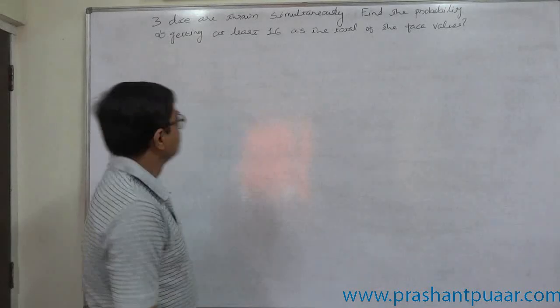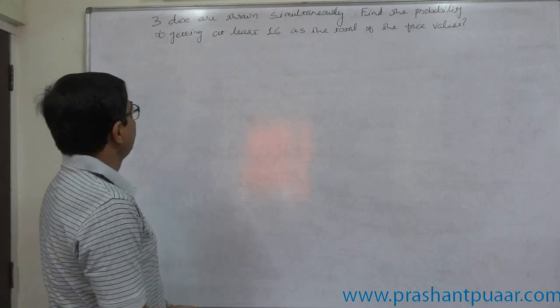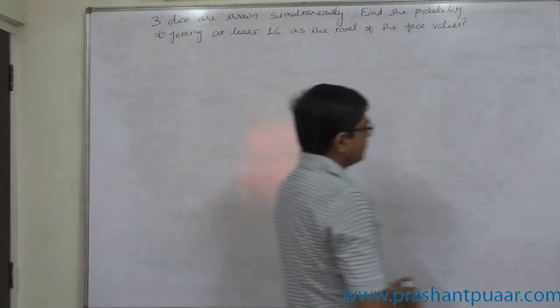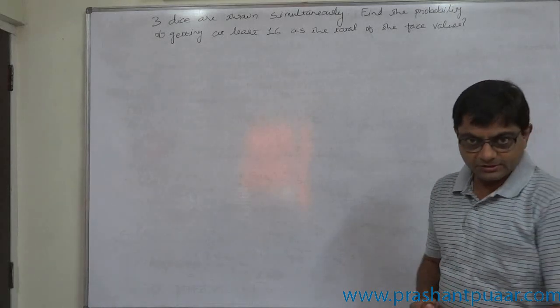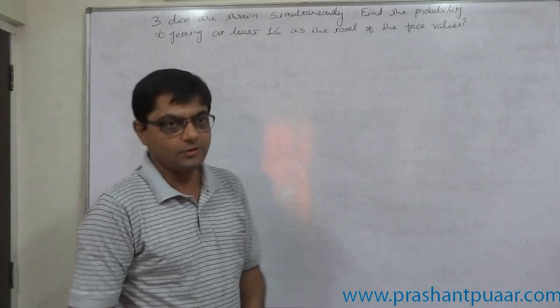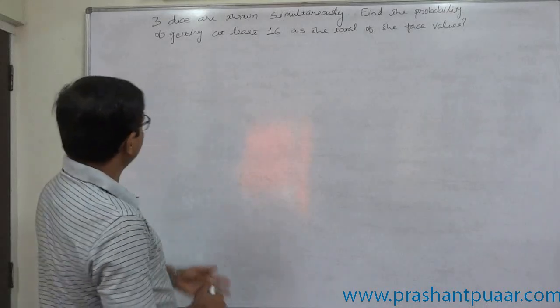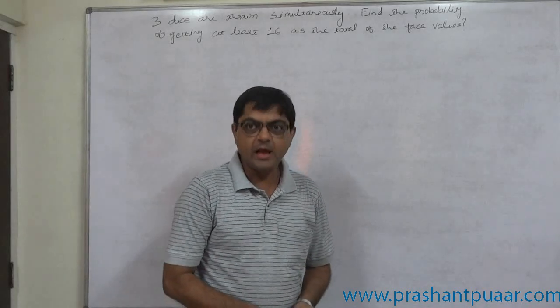The problem is: three dice are thrown simultaneously. Find the probability of getting at least 16 as the total of the face values. First of all, three dice are thrown simultaneously.